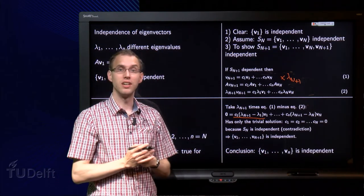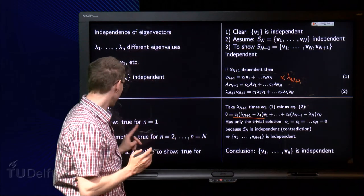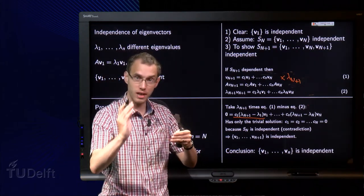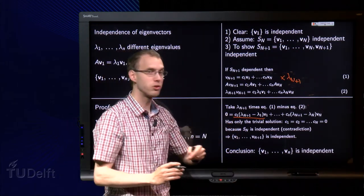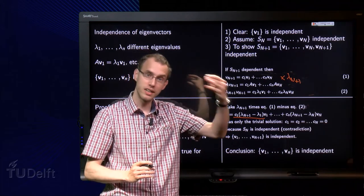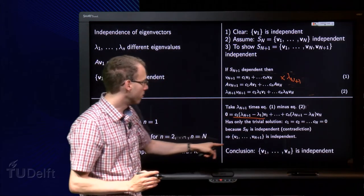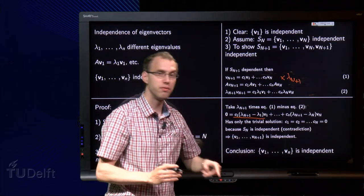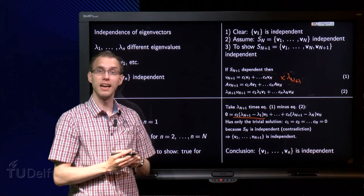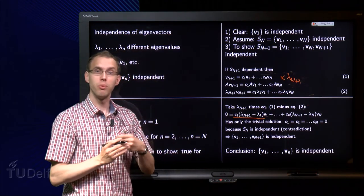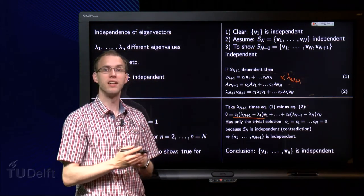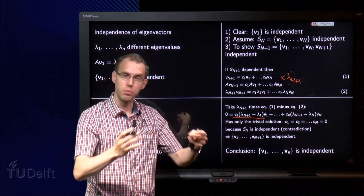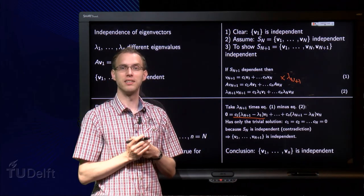This completes the induction step. Given the assumption that the statement is true up to capital N, we have shown it is also true for capital N plus 1, which proves it is true for all N. This means that the set V1 to VN is independent — so if you have different eigenvalues, the corresponding eigenvectors are independent.